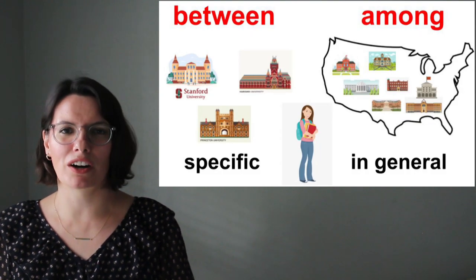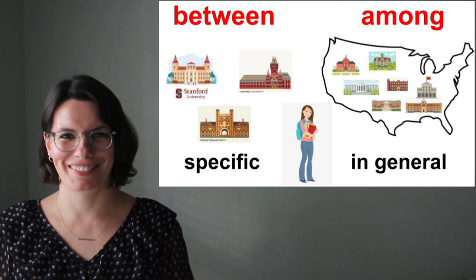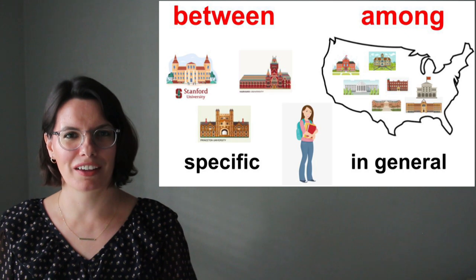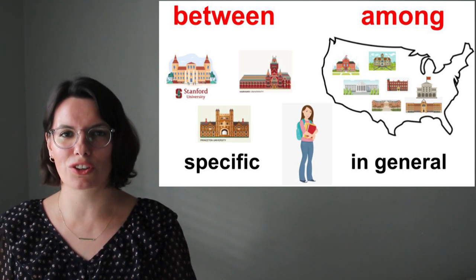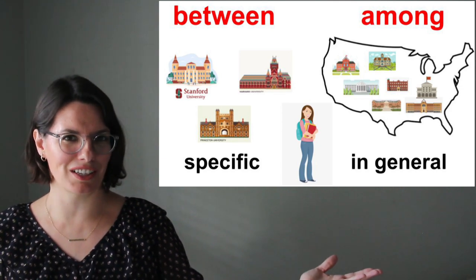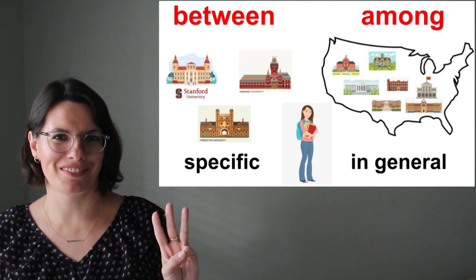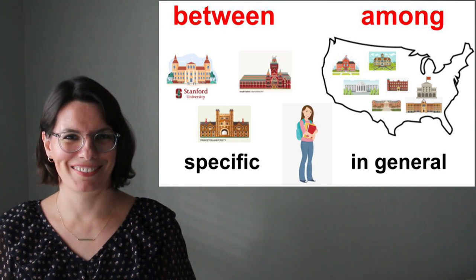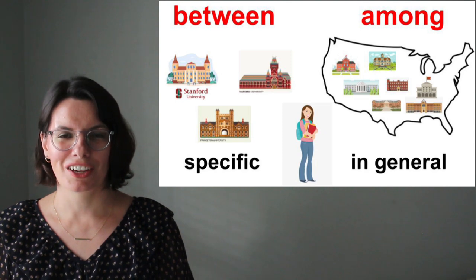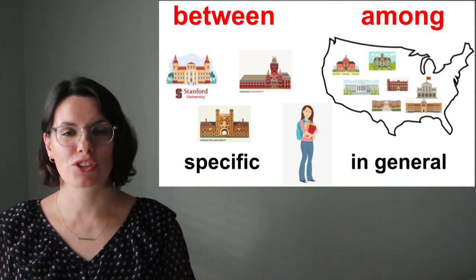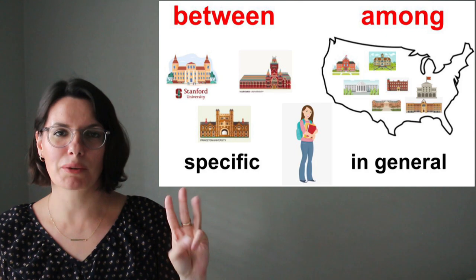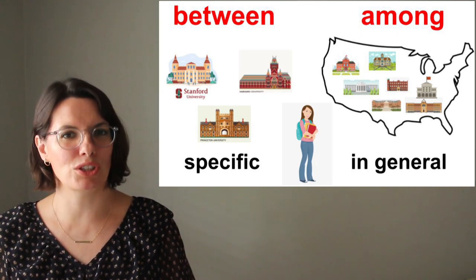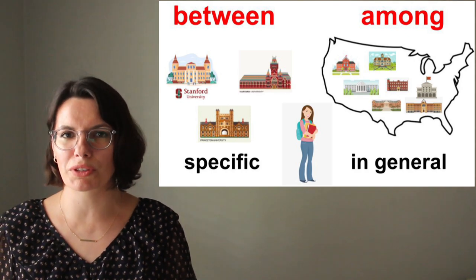But we can also use between when we talk about more than two things. We use among when we talk about something in general — when we talk about a group as a whole. For example, she is a student who wants to study at a university in the United States. There are many universities in the United States. Among all the universities, she likes only three: Stanford, Harvard, and Princeton. Now she has to choose between Stanford, Harvard, and Princeton. We are talking about three specific universities, so in this case we use the preposition between. Does she need to choose between Stanford, Harvard, and Princeton?